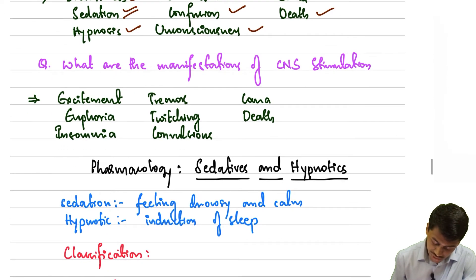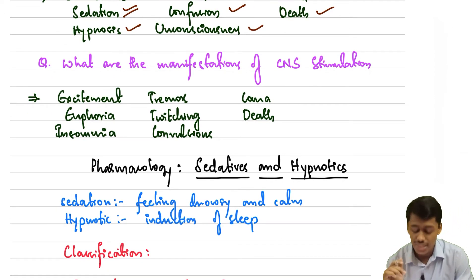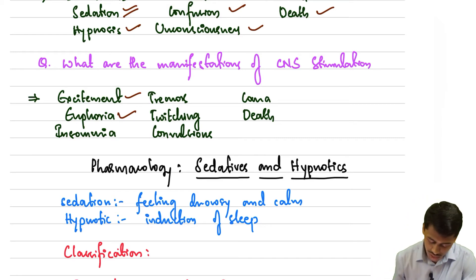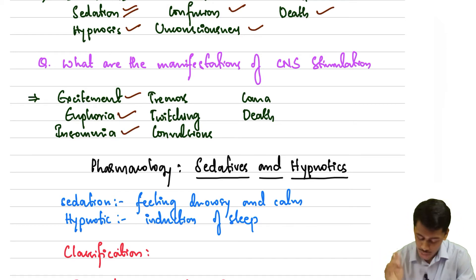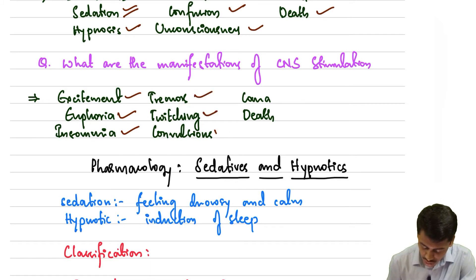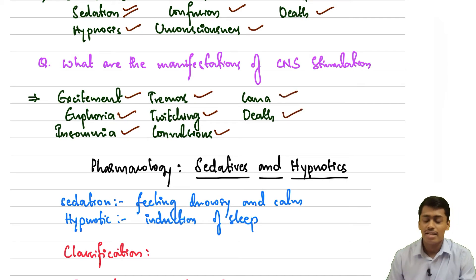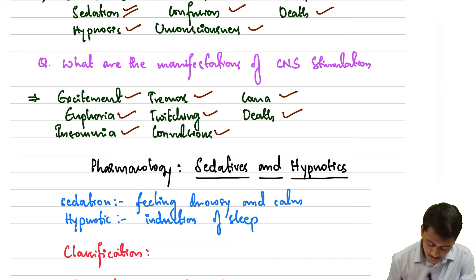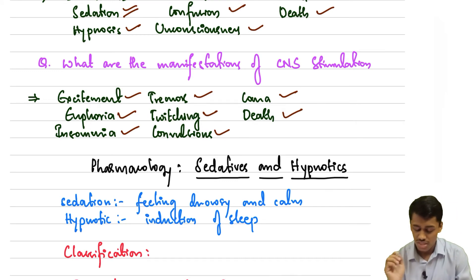What are the manifestations of CNS stimulation? We have excitement — feeling excited — then euphoria, where you feel everything is wonderful around the world. Then you feel insomnia, where you just can't sleep. Then we can see tremors, twitching, convulsions, and finally if the excitation goes too much, the person might land in coma and death. So these are the manifestations of CNS stimulation.